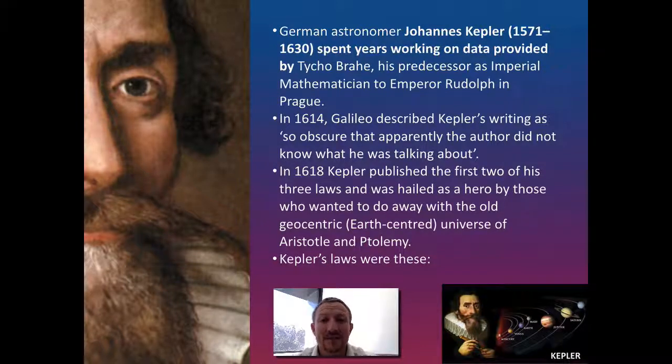After Tycho Brahe's death, Kepler tried to start explaining a number of observations, and one of the big things he wanted to talk about was the Mars loop. This is where Mars, which can be seen from Earth, seemed to make this backward shift in its orbit.